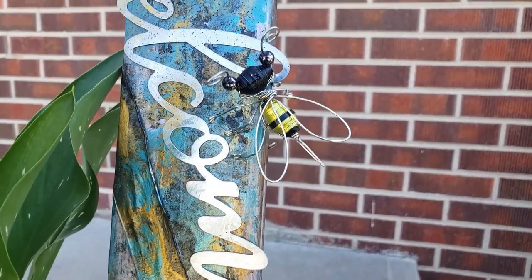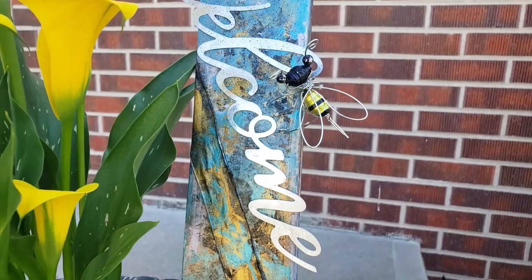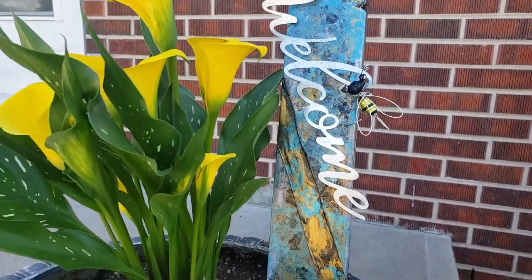And for today's project, I'm going to be making a cute little bumblebee plant charm from an empty aluminum can.